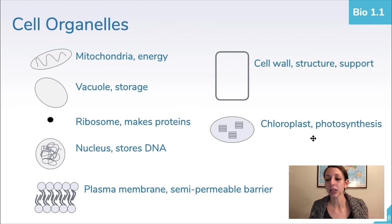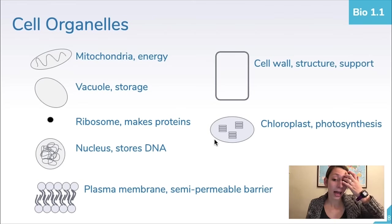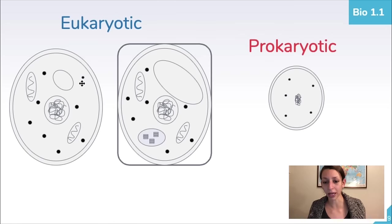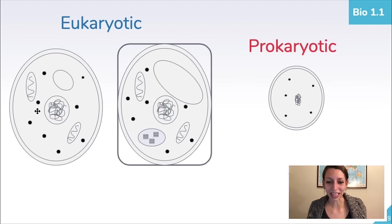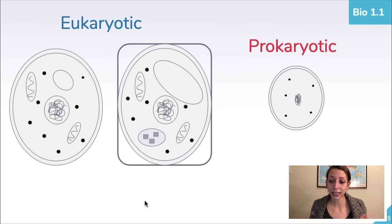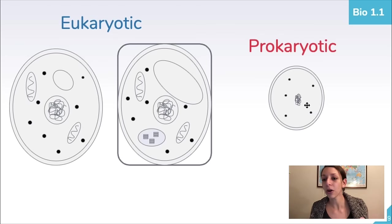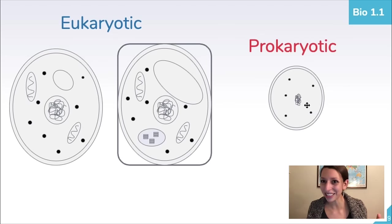The chloroplast is the site of photosynthesis, only in plant cells. Both plant and animal cells are eukaryotic, meaning they have a true nucleus and other membrane-bound organelles like mitochondria and vacuoles — these are generally larger and more complex. Prokaryotic organisms are more primitive and thought to have evolved first. They are very simple, very small, and more abundant on Earth than eukaryotic cells.